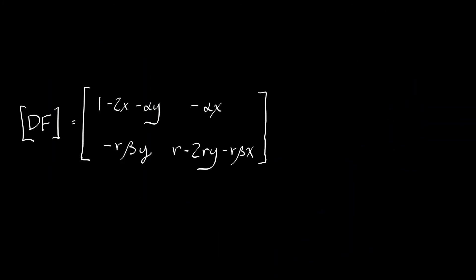At the second equilibrium, at 1 comma 0, if we take the derivative that we computed, evaluate at X equals 1, Y equals 0, then we get the matrix whose rows are negative 1, negative alpha, 0, and R times quantity 1 minus beta.